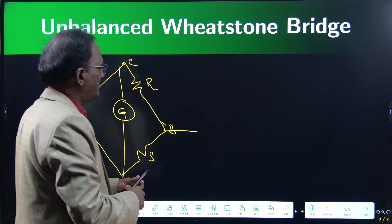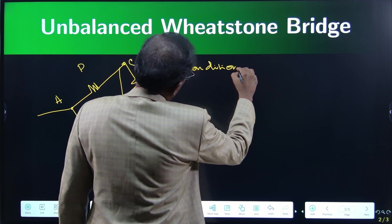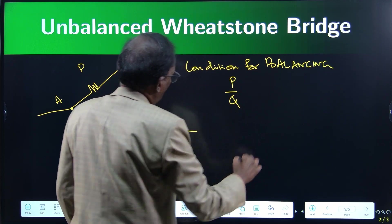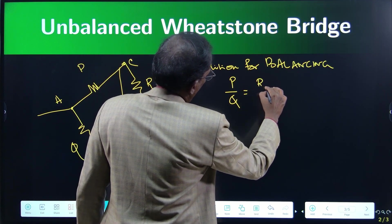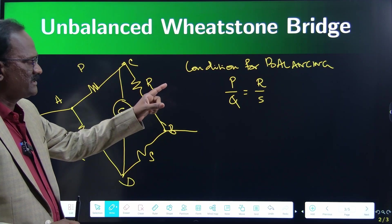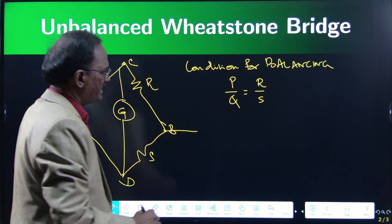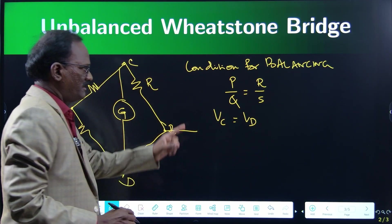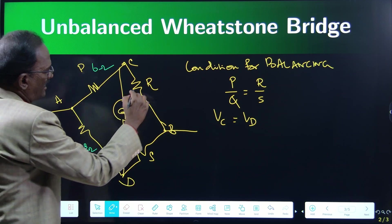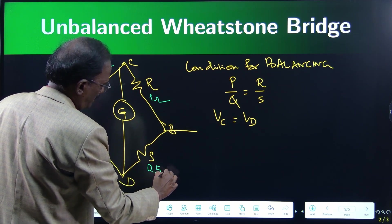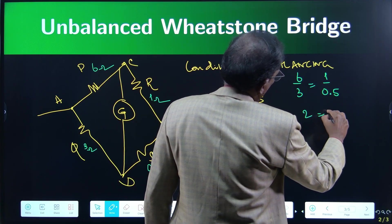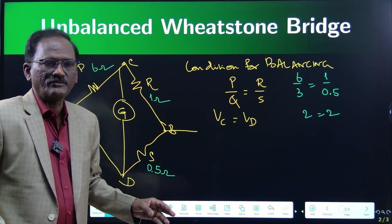The condition for balancing is that the ratio P/Q equals R/S. This is the null position condition — it is satisfied when the voltage at C equals the voltage at D. For example, if P = 6 ohms, Q = 3 ohms, R = 1 ohm, and S = 0.5 ohms, then 6/3 = 2 and 1/0.5 = 2, so the bridge is balanced.